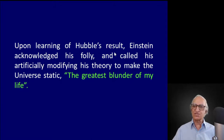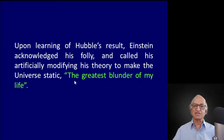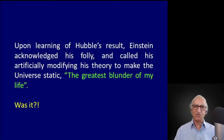Hubble remarked that clusters of galaxies are everywhere running away from us, as though there was plague on Earth. Upon learning of Hubble's result, Einstein acknowledged his mistake and called his artificial modification of his beautiful theory of relativity — introducing a constant to make the universe static — the greatest blunder of my life. But wait and watch: was it really a blunder?